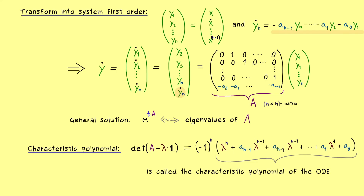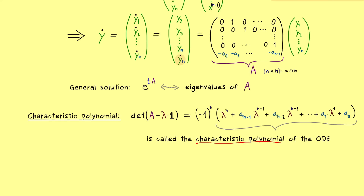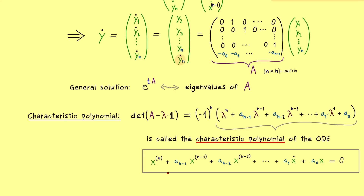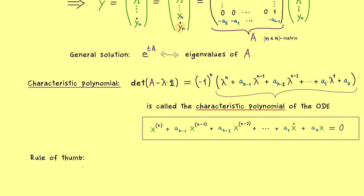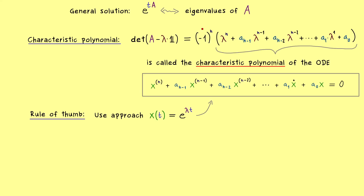This is easy to remember because our ODE looks exactly the same: instead of the function x we have λ, and the power matches the degree of the derivative — for x itself we just have power 0. Another useful way to remember this is via an ansatz: test a potential solution, namely an exponential function e^(λt). Put it into the ODE and the derivatives exactly produce our characteristic polynomial. We then search for the zeros, which are the eigenvalues of A.